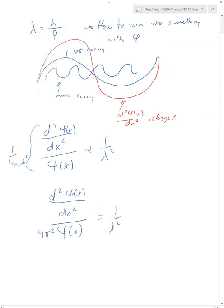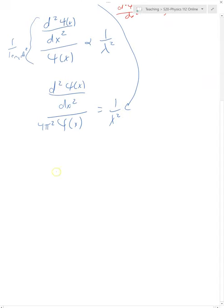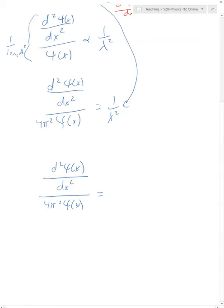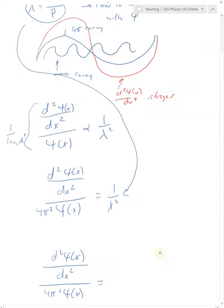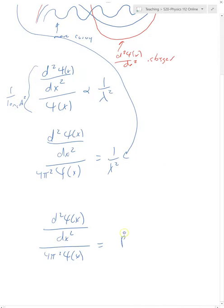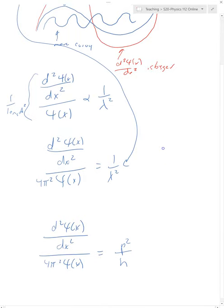So now we can just take our de Broglie relation and bring it down here. So we get d squared psi of x over four pi squared psi of x, and that's just going to equal one over lambda squared. But one over lambda squared is just going to give us, sorry, let me make sure I get this right. One over lambda squared is just going to give us a p squared over h squared.